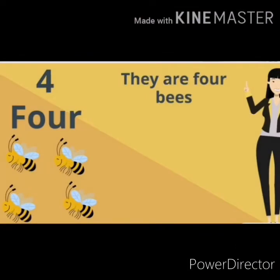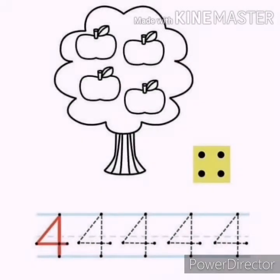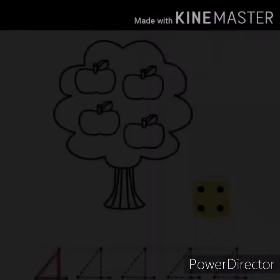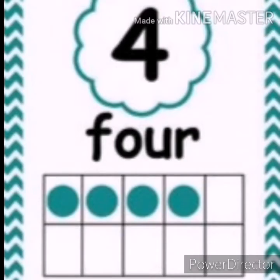What is this number? Four. How many bees are there? Let's count: one, two, three, four. There are four bees. What's this number? Number four. How many apples are there? One, two, three, four. There are four apples. How many dots? One, two, three, four. There are four dots. What is this number? Number four.